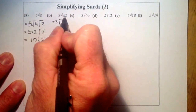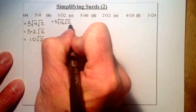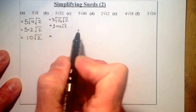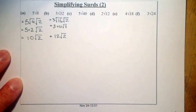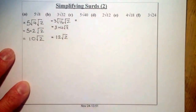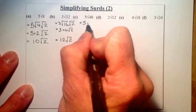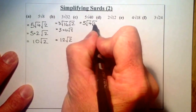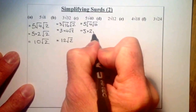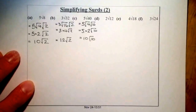For 3 root 32: I'm looking at two numbers that multiply to give 32. We just did that — it's root 16 and root 2. From root 16 I get 4, then I multiply the numbers outside the root: 3 times 4 gives 12 root 2. For 5 root 40: a square number that gives 40 is 4, so I use root 4 and root 10. That gives 5 times 2 root 10, which is 10 root 10. I can't simplify root 10 further, so that's my final answer.